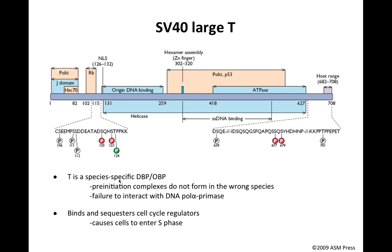This protein is also species-specific. SV40 is a virus that infects monkeys and does not replicate its genome well in other species, because the T protein doesn't interact with the polymerase alpha-primase of other species. So large T controls whether DNA replication occurs in other species. The T antigen binds and sequesters cell cycle regulators RB and P53, which makes cells enter S phase of replication — why the virus would want to do that will become obvious in the next segment.